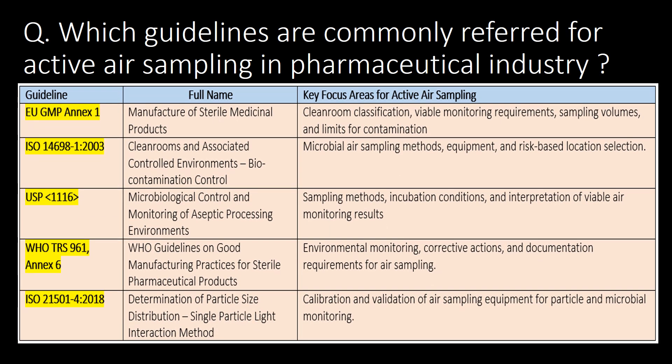Very important question: which guidelines are commonly referred to for active air sampling in the pharmaceutical industry? GMP Annex 1, ISO 14698, USP chapter 1116, WHO TRS No. 961, and ISO 21501 are the commonly referred guidelines for active air sampling in the pharmaceutical industry.